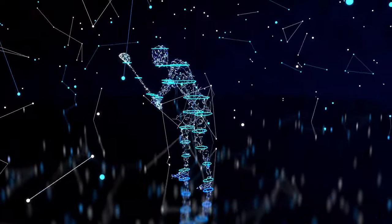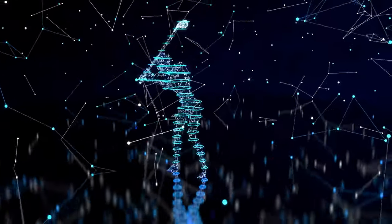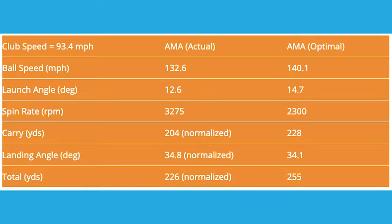Welcome back to the Golfing Focus channel. According to TrackMan, the ideal launch angle and spin rate for the average male amateur hitting driver are 14.7 degrees and 2,300 rpm. These optimal launch conditions are based on the average man's driver club head speed of 93.4 miles an hour and attack angle of minus 1.6 degrees, both of which have a big effect on the ideal mix of launch angles and spin rates for each golfer.